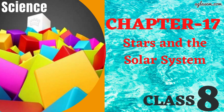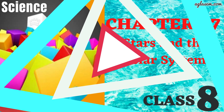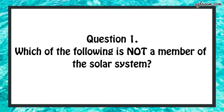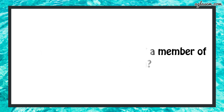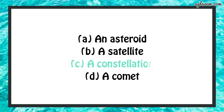Let's discuss question and answers. Question number 1 says: which of the following is not a member of the solar system? A - an asteroid, B - a satellite, C - a constellation, D - a comet. The answer is C, a constellation.